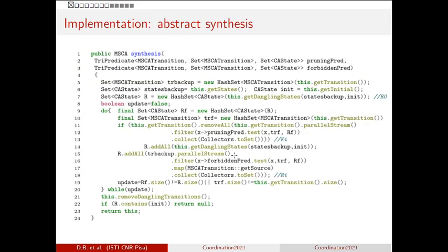This is the implementation of the abstract synthesis in our tool. The pruning and forbidden predicates are rendered as tri-predicates, which take three arguments. The fixed-point computation is rendered as a do-while loop, and for deciding which transitions to prune and which states are forbidden, we compute this set using parallel streams to speed up the computations in Java. It is a pretty straightforward implementation of the specification, and in the paper you will find an informal argument of the adherence of this implementation with the specification.